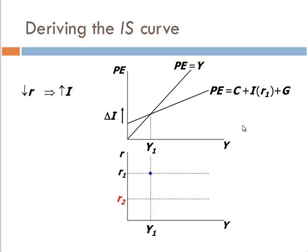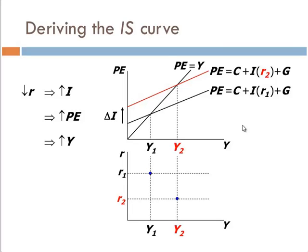If the interest rate goes down, investment should go up because we've reduced the opportunity cost of investing. If we lower the interest rate, investment will go up because it decreases the cost of investment. So we shift the planned expenditure function up and we get a new equilibrium of Y2.